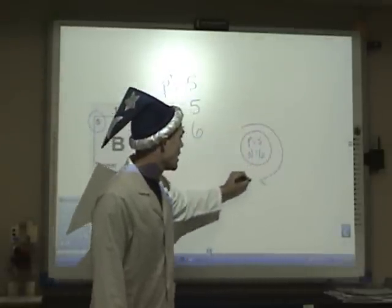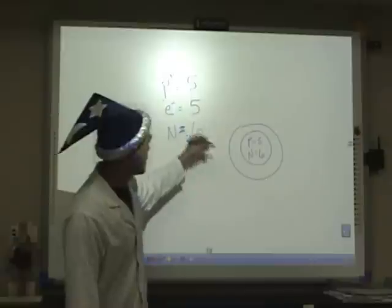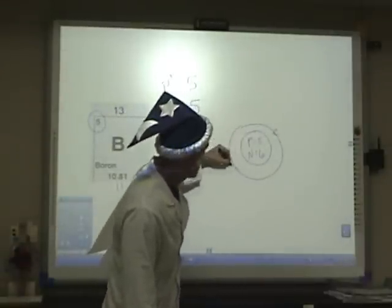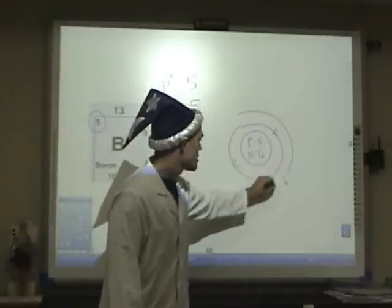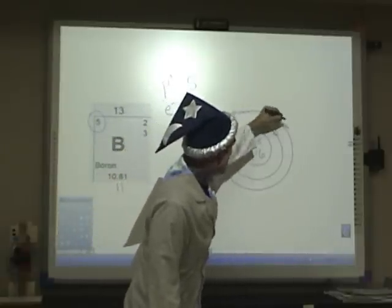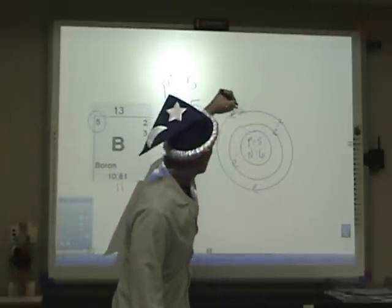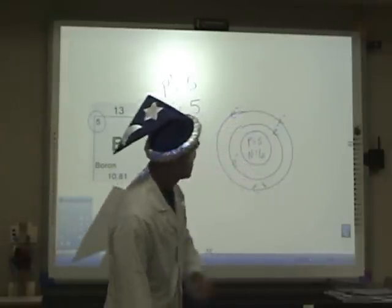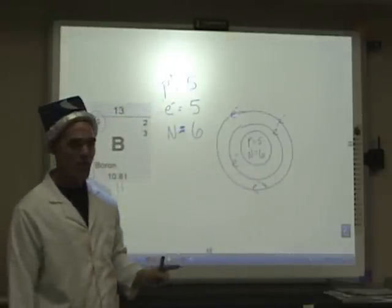And now, we need to draw our electron clouds. And in our innermost cloud, again, we can have no more than two. So, two of the five electrons occupies the first cloud. And the remaining three become the valence electrons for a grand total of five. And I should probably put a little negative signs there, because they are negatively charged. There we go. And that's how that works on that one.